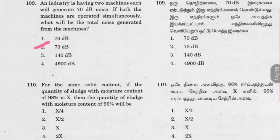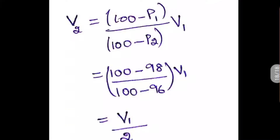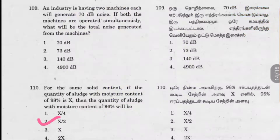Question 110: For the same solid content, if the quantity of sludge with moisture content of 98% is x, then the quantity with moisture content of 96% is what? The formula is: V2 equals (100 minus P1) divided by (100 minus P2) into V1. So (100 minus 98) by (100 minus 96) into V1 equals 2 by 4 into V1, which is x by 2. Option 2 is the right answer.